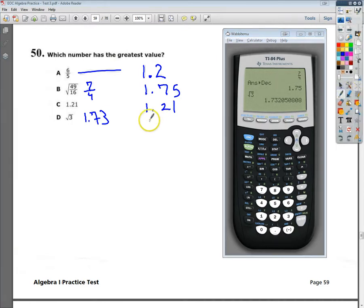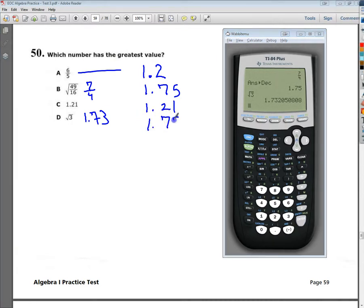Now I need to make comparisons of these by place value from left to right. Which number has the greatest value? Well, the ones are all the same, so everything is good there. In the tenths place, this one would be out, as would this one.